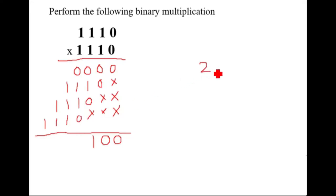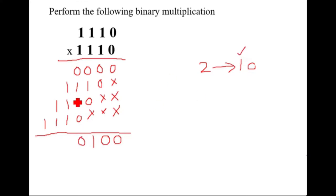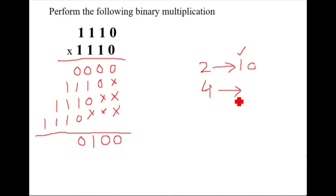In binary addition, for two we write it as one zero. So you put zero here and this one will be a carry. Now one, one, one makes three. You add this one so it becomes four. How do you write four? One, zero, zero — so here it will come only zero.